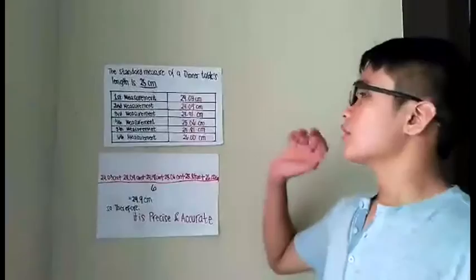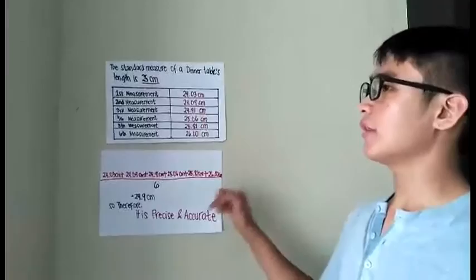So, the standard measure of a dinner table's length is 25 cm, and I measured it 6 times.